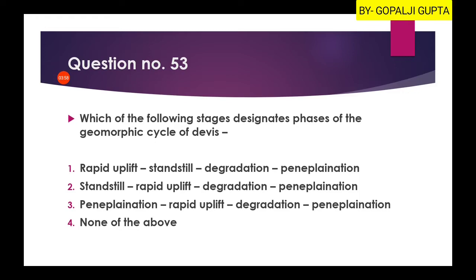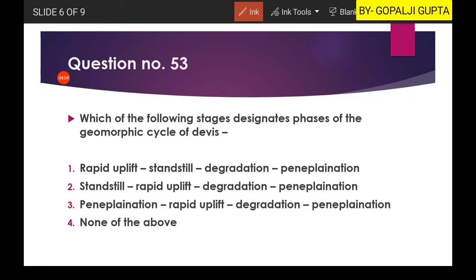Next question: 'Which of the following stages designates phases of the geomorphic cycle of Davis?' Geomorphology includes erosion, transportation, deposition, degradation, and aggradation. A cycle was proposed by W.M. Davis.